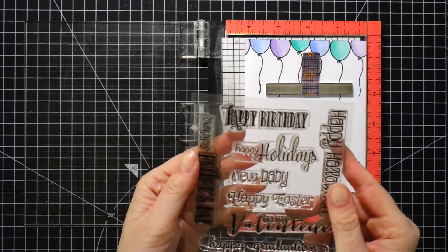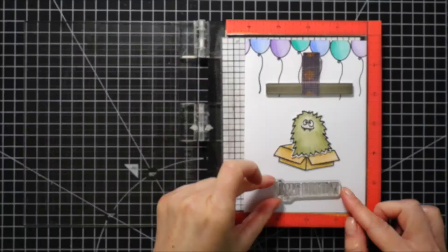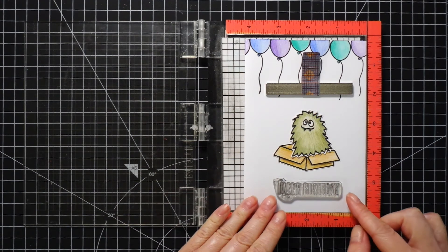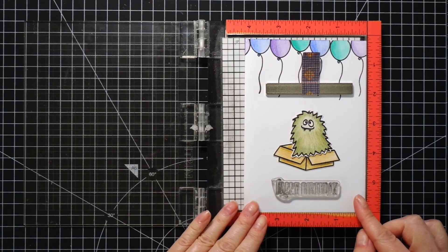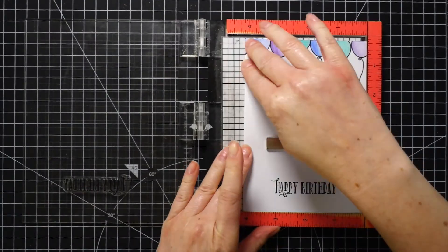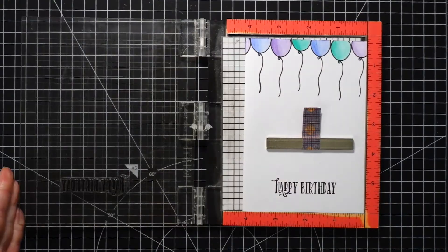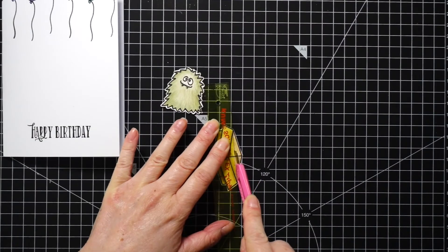After I was done coloring the balloons I stamped the sentiment. The stamp set with the monsters has sentiments for birthday as well as for Halloween, but they are meant to be stamped on top of the box. Therefore they are slightly tilted and I wanted to stamp the sentiment below the monster, so I picked a stamp from another stamp set.